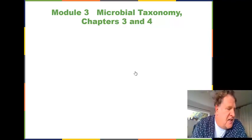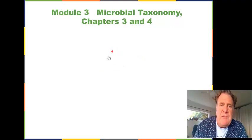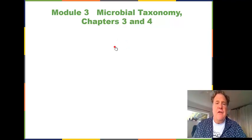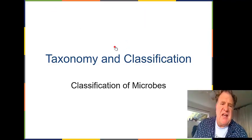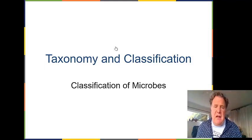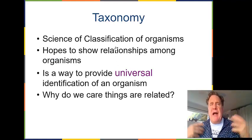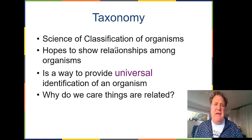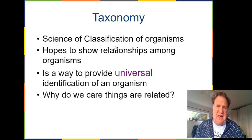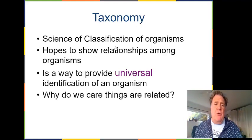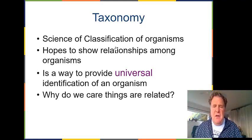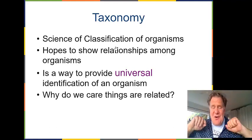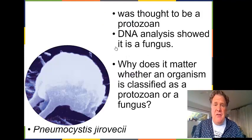I want to break this up into three sections so I can have three individual videos, and I'll try to keep these videos down to about 20 minutes apiece. For this first video we're going to be looking at microbial taxonomy — how microbes relate to one another. The science of classification of organisms is basically what we call taxonomy, and through taxonomy we hope to show the relationships among organisms and provide a universal identification.